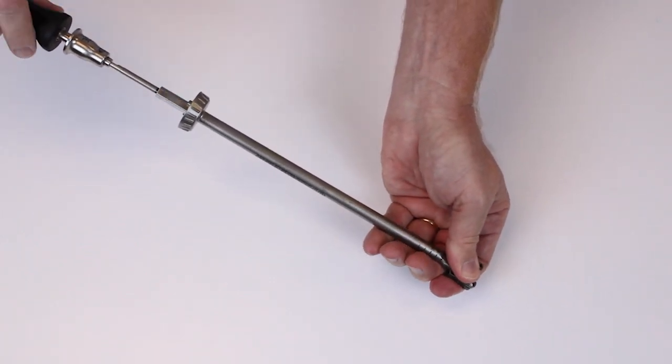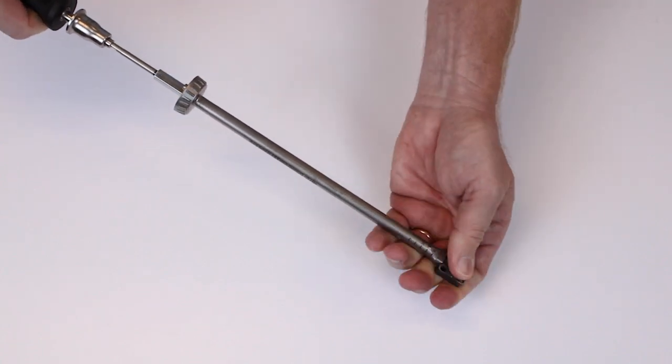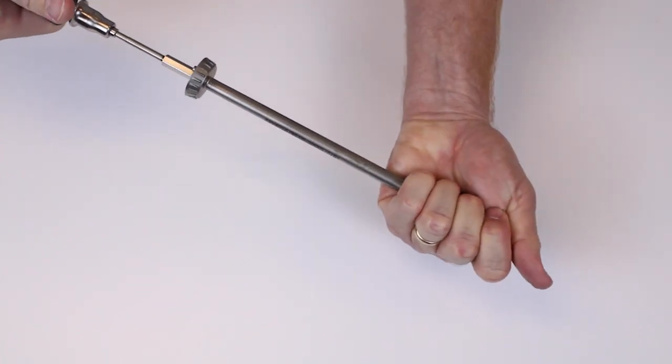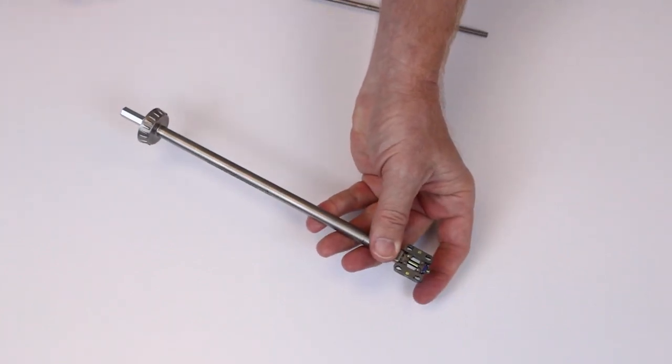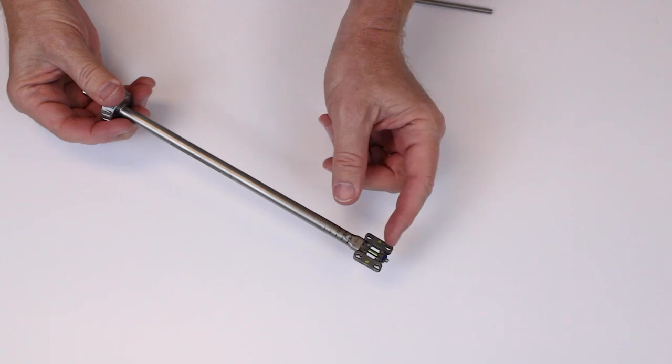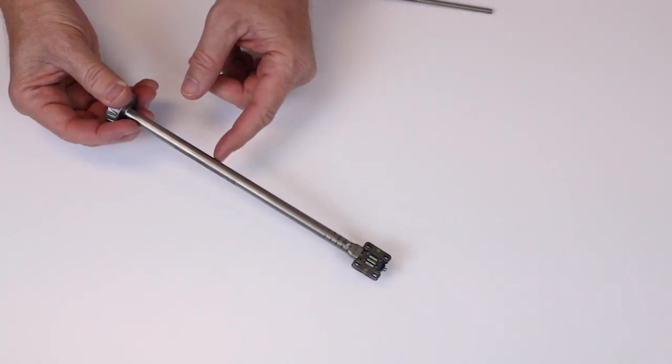The lockout screw torques out and then can be removed. Now you have an expanded implant with a lockout screw still attached to the tube.